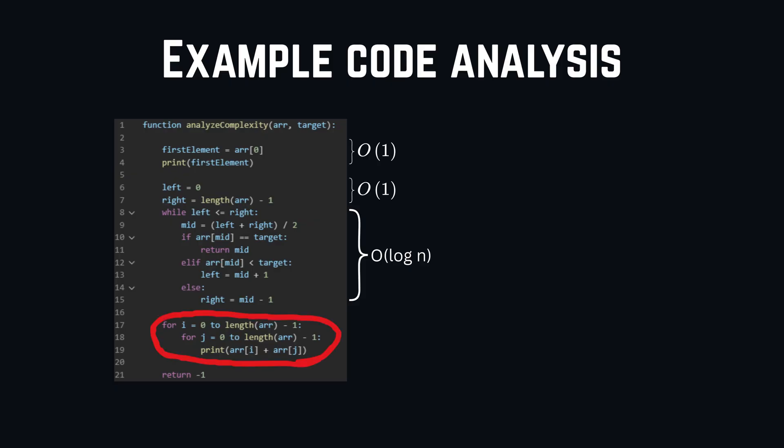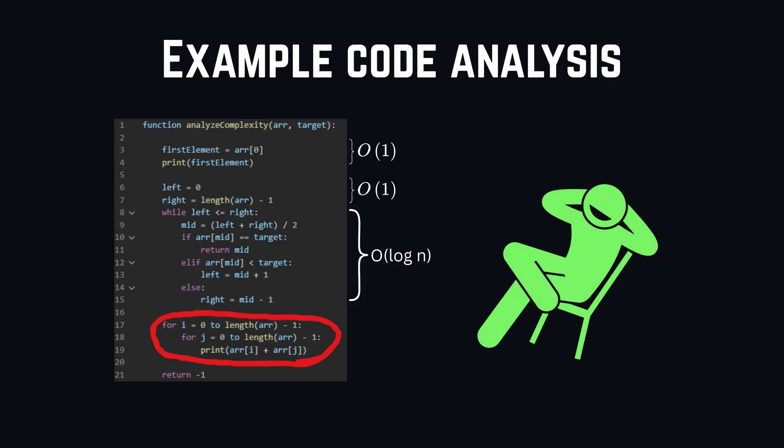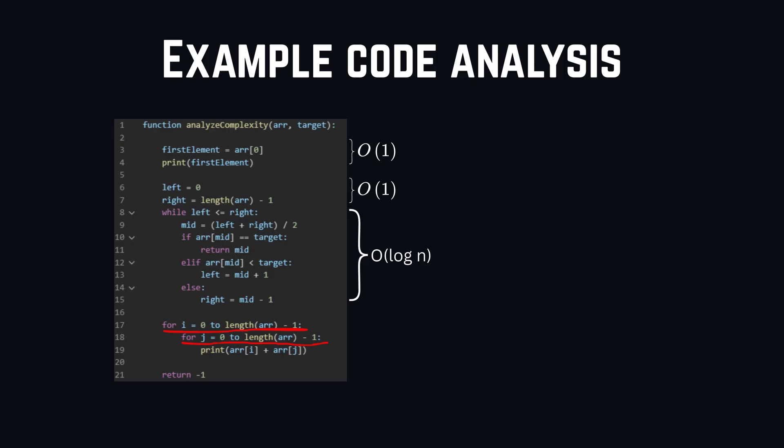Alright, then let's look at the next lines. At this point, it's pretty easy now. We have a loop in a loop. And this is nothing more than O to n squared. And the last line is just the return statement. So, O of 1.